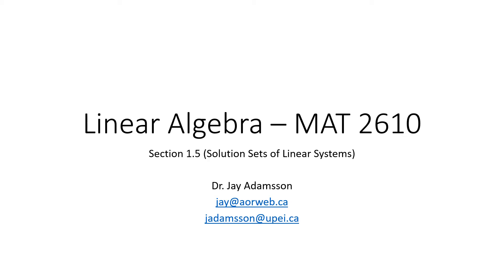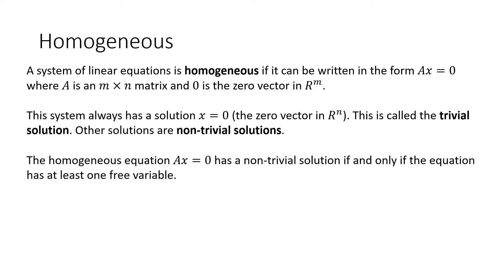Welcome back. We're going to look now at section 1.5 of the book, Solution Sets of Linear Systems. First, a definition: homogeneous. A system of linear equations is homogeneous if it can be written in the form Ax equals zero, where A is your matrix and zero is the zero vector.